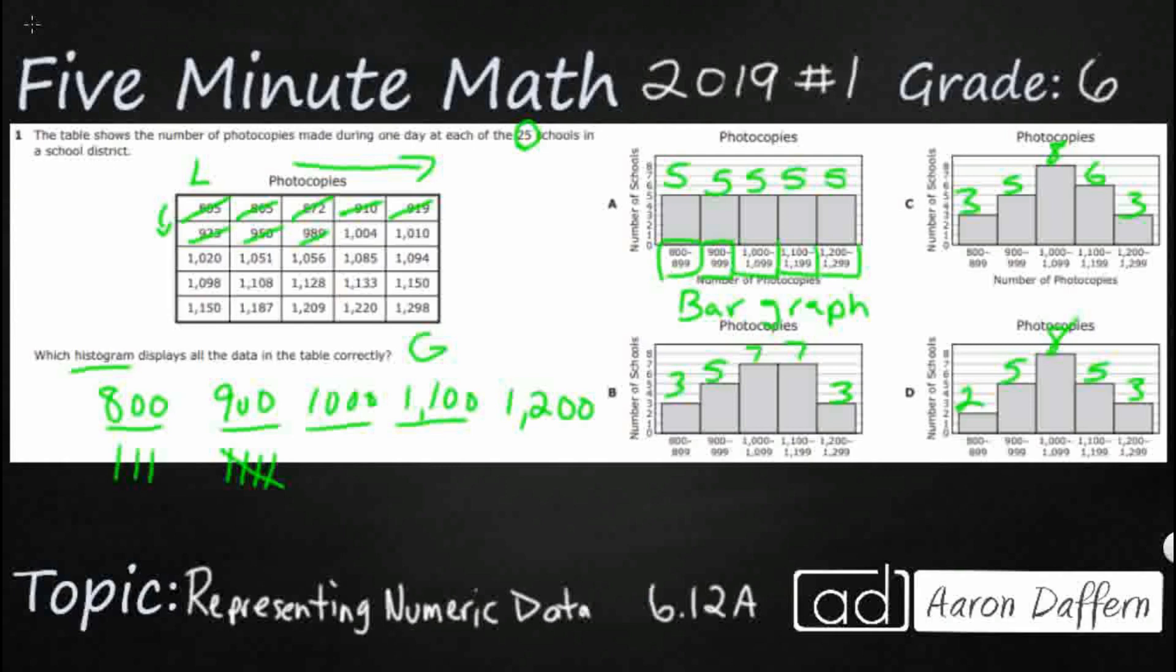In the 1000 to 1099 range, I've got 1, 2, 3, 4, 5, 6, 7, 8. That last one barely snuck in.